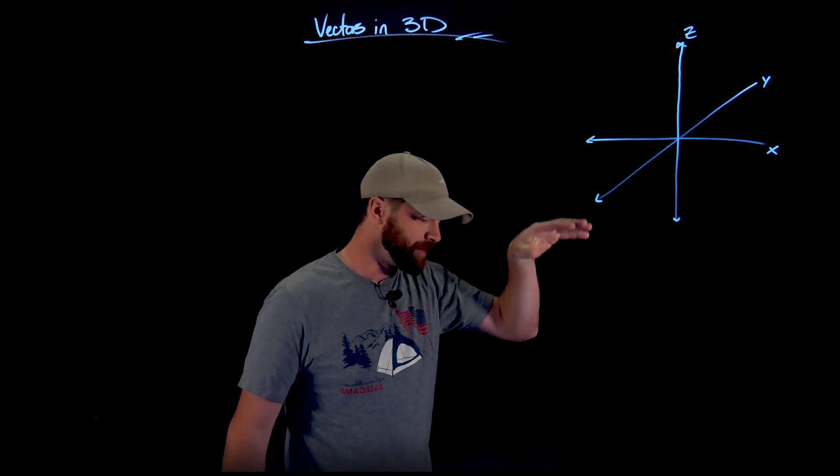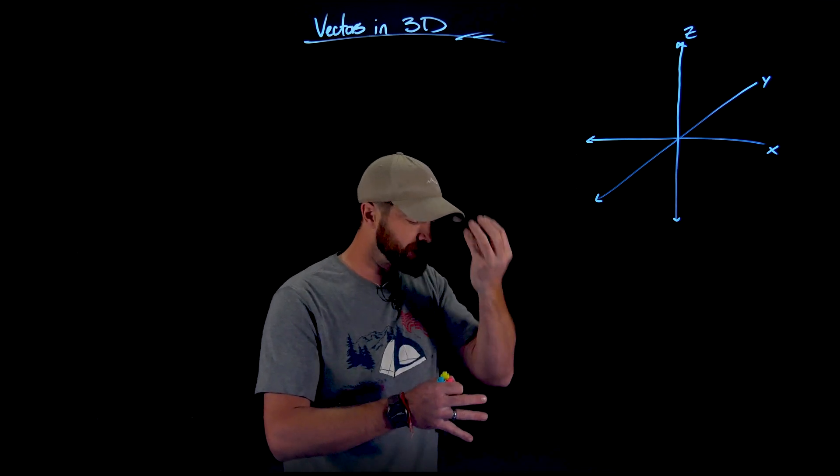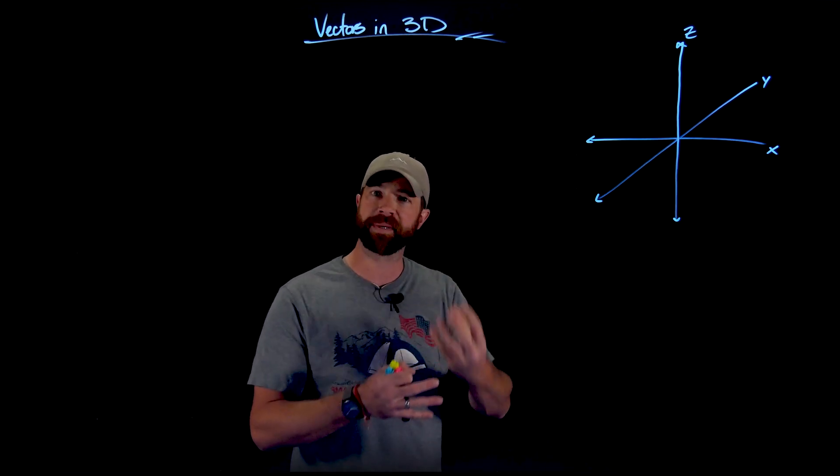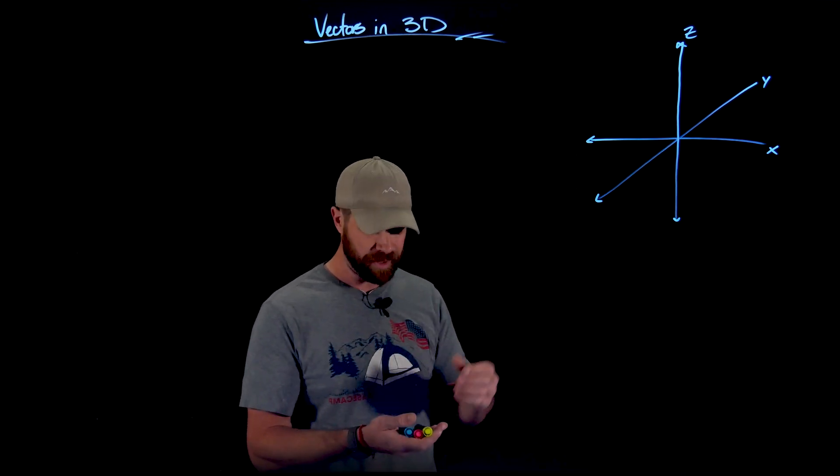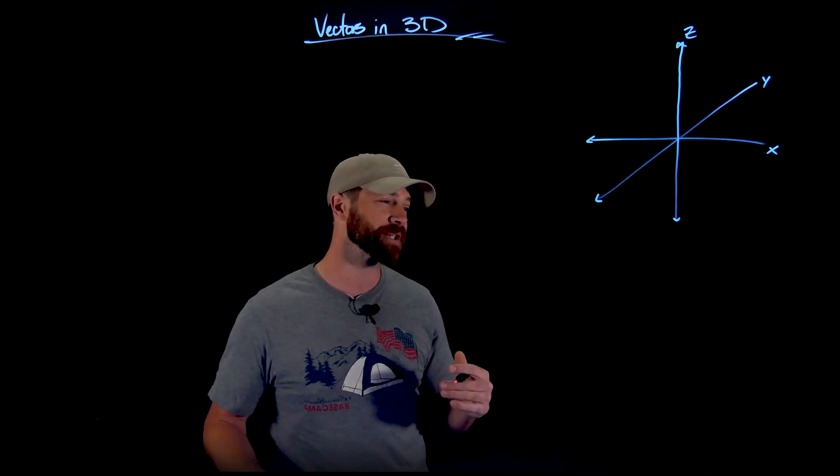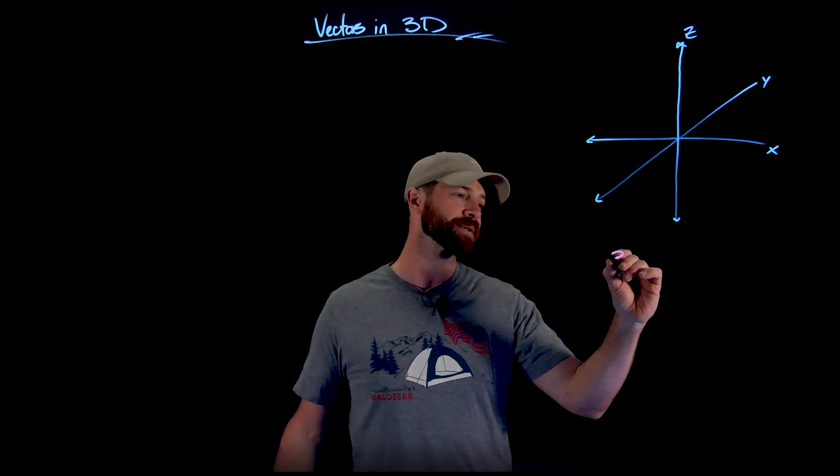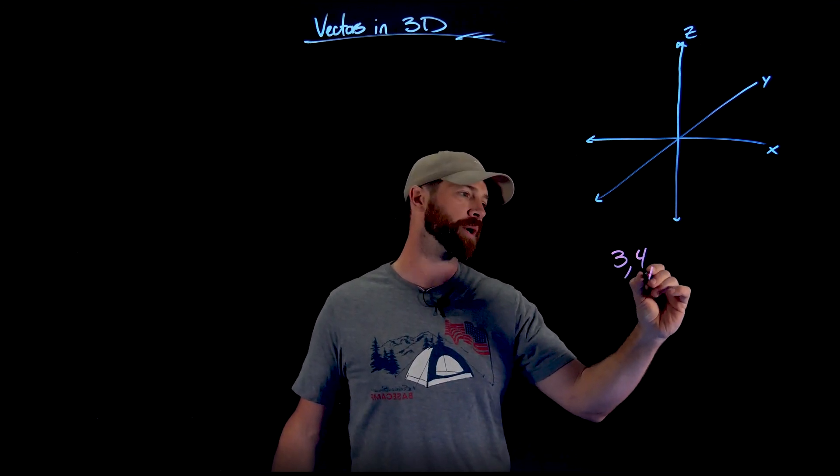When you're thinking about this, think about looking down at the XY two-dimensional plane, and then the Z axis is coming out to give it some of that vertical depth. But importantly here, you'll notice it gets a little bit awkward when you're trying to sketch stuff in these three dimensions, but let's just look at an ordered triple real fast. So let's say 3, 4, 2.